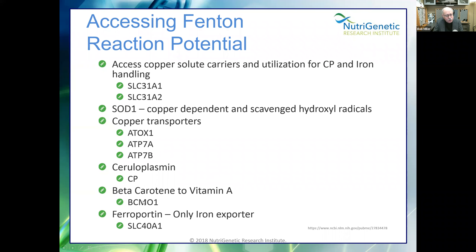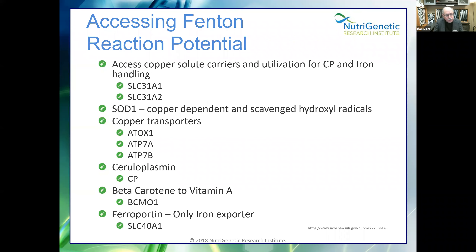Beta-carotene from carrots needs to be converted to vitamin A — mutations in BCMO1 can inhibit that conversion. If you see this, measure beta-carotene and vitamin A. Ferroportin, encoded by SLC40A1, is your only iron exporter. If we don't export iron, it can get stuck inside the cell and cause all kinds of damage. We've observed many times that people with genetic issues causing iron over-absorption have ferroportin enzyme mutations, yet their blood work comes back anemic.